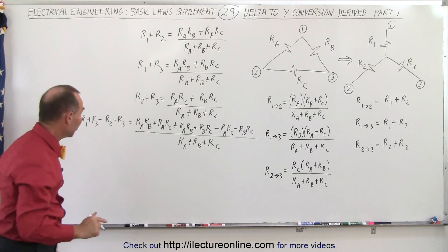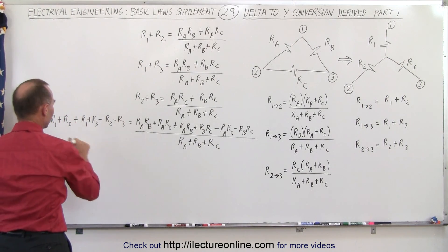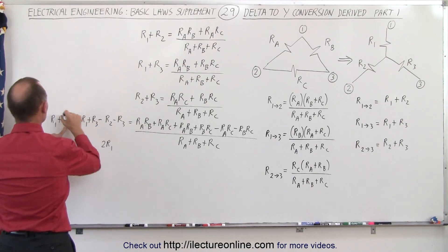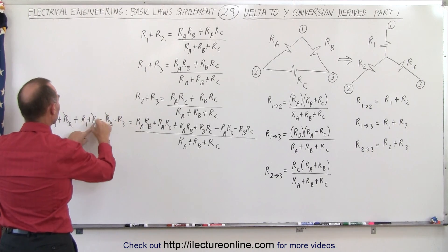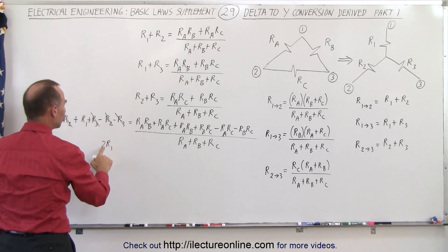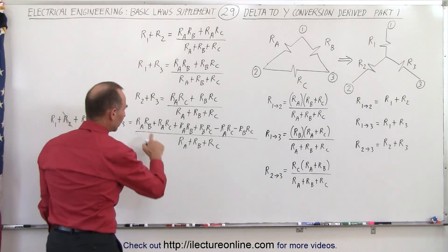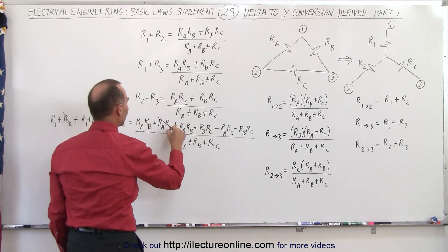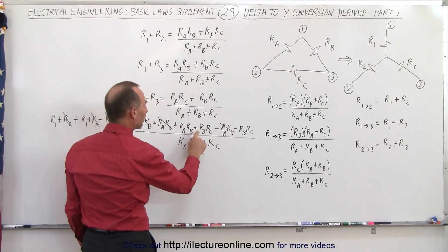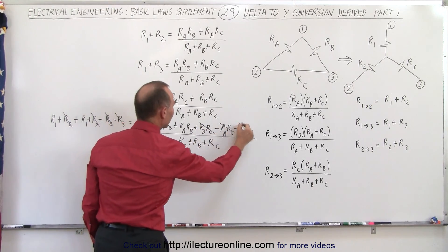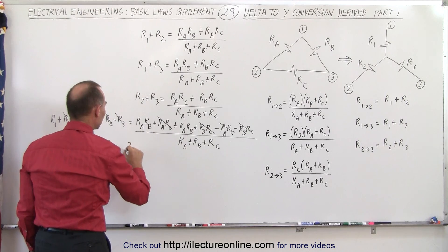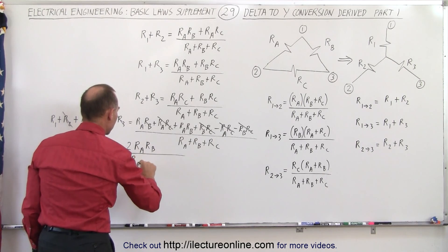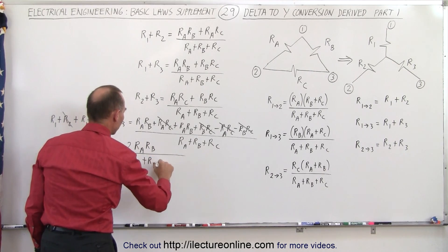On the left side, we have two R1's giving 2·R1; the R2's cancel and the R3's cancel, leaving simply 2·R1. In the numerator on the right, the RA·RC terms cancel and the RB·RC terms cancel, leaving 2·RA·RB. So we have 2·R1 = 2·RA·RB divided by (RA + RB + RC).